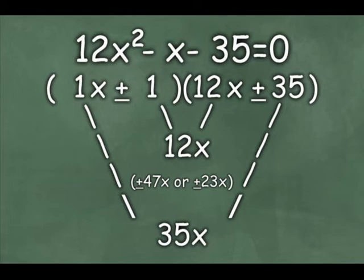47 and 23, that you could come up with by adding or subtracting those two terms. And those aren't going to multiply to a negative one. So unfortunately, I think we picked the wrong one to start off with.